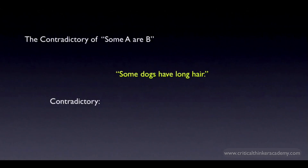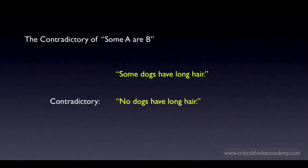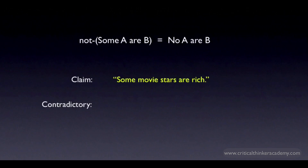Now, let's look at the contradictory of 'some A or B.' Take 'some dogs have long hair.' If this is false, what does that imply? Does it imply that all dogs have long hair? No. At most, that would be a contrary, if we were reading 'some' as 'at least one but not all.' The contradictory of 'some dogs have long hair' is 'no dogs have long hair.' If no dogs have long hair, then it's always false that at least one dog has long hair, and vice versa. So the general form of the contradictory looks like this: 'it's not the case that some A or B' means 'no A or B.'